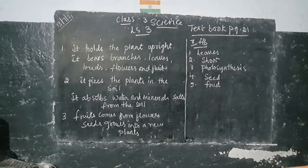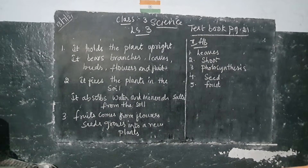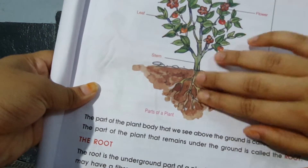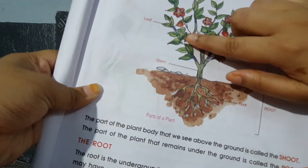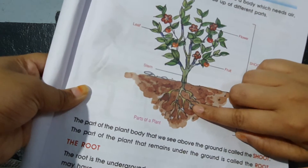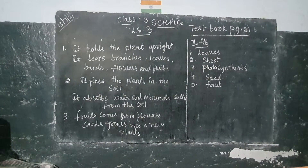What are the functions of roots? Roots are present under the ground. What roots do is fix the plants in the soil. They absorb water and mineral salts from the soil and supply them to all other parts of the plant. These roots collect water as well as minerals and supply them all over to the parts of the plant.